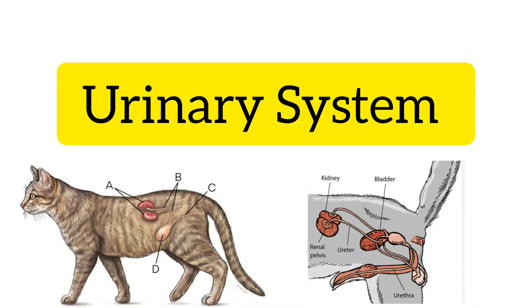The urinary tract includes kidneys, ureters, the bladder and urethra. Urolithiasis is the formation of stones, concentration of mucus, protein, and minerals in the urinary tract.